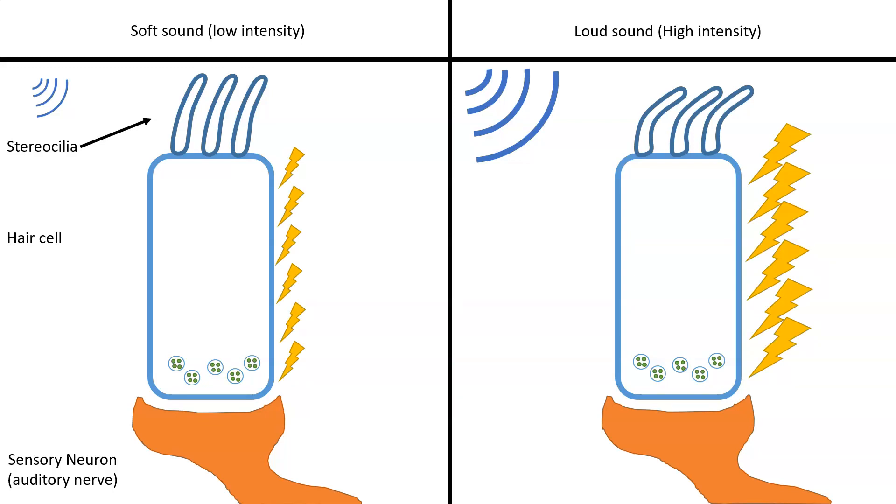As we now know, opening of ion channels will cause the membrane potential to depolarize. In this case, the depolarization travels down towards the sensory neuron that you see in orange. We call this change in membrane potential in a sensory cell a generator potential, as it is generating the signal to detect specific information from our environment.